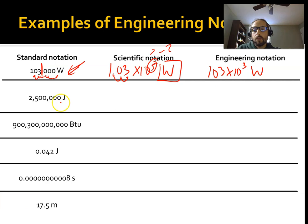All right, so let's try this one. So we have 2.5 million joules. So you have 3, 6, right? So 2.5 times 10 to the 6th joules. Now you notice we're already at a multiple of 3, so we don't need to subtract or add. So we're already in engineering notation. So it's going to be 2.5 times 10 to the 6th joules is our engineering notation. So engineering notation, it just means you have a multiple of 3 in your exponent. So it could be 3, 6, 9, 12, et cetera, or negative 3, negative 6, negative 9, and so forth.